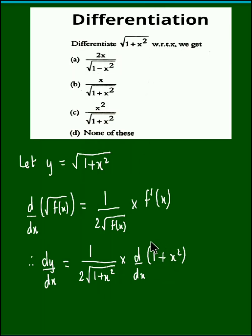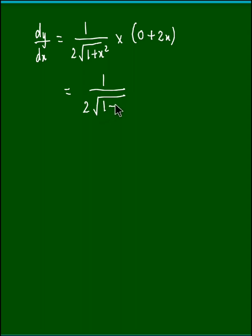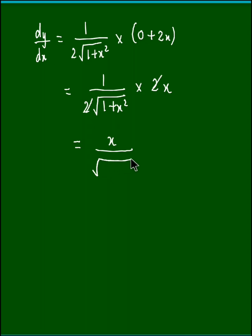Now, checking the derivative of 1 plus x squared: the derivative of 1 is 0 and the derivative of x squared is 2x. So we multiply by 0 plus 2x. The next step gives 1 upon 2 root of 1 plus x squared, into 2x. Now this 2 cancels with the 2 in the denominator, and we obtain dy by dx as x upon root of 1 plus x squared.